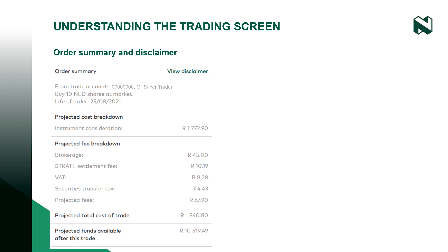If you have placed a market order, it is valid for the current trading day only. If you have placed a limit order, you can choose the life of the order by stipulating a period for your order to be valid.